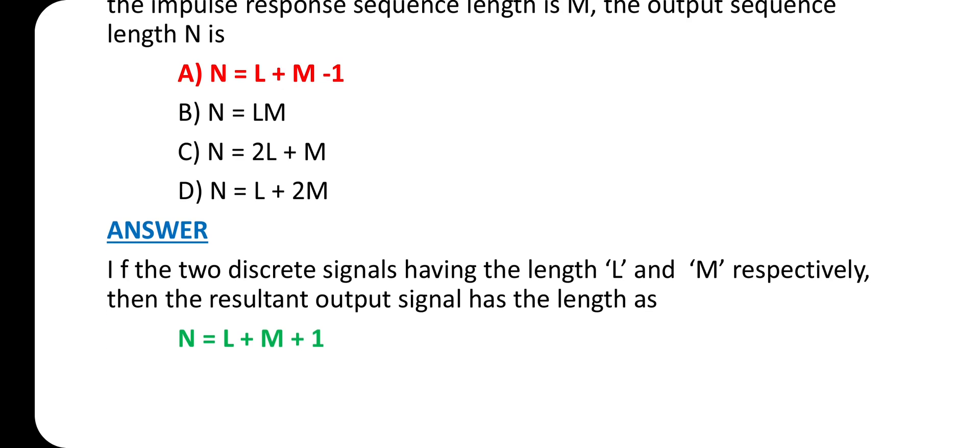If two discrete signals have length L and M respectively, then the resultant output signal has length N = L + M - 1. Thank you.